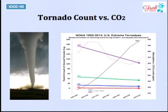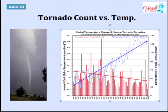Here's tornadoes versus CO2. Every category of tornadoes has been going down or flat as CO2 has risen. The F2s, the 3s, the 4s, the 5s are all either down or flat. And here it is versus temperature — basically the same. Even if you take out the outliers, you still have a decreasing tornado count versus temperature.